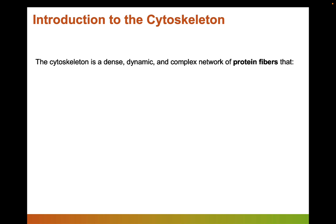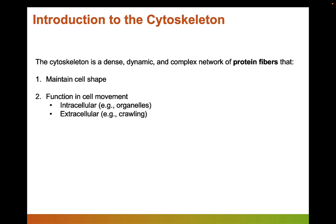In this last video we're going to be talking about a really important protein network inside eukaryotic cells called the cytoskeleton. I'm going to begin by defining what the cytoskeleton is: it's a dense, dynamic, and complex network of protein fibers. There are a lot of cytoskeletal proteins in cells; they're constantly rearranging, and they interact with one another. They function in maintaining the shape of cells and in helping cells move — either intracellular movements like moving organelles when the cell divides, or moving along in the extracellular environment by crawling.